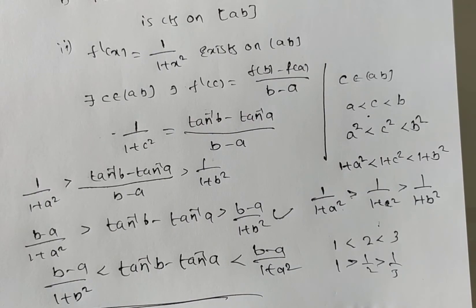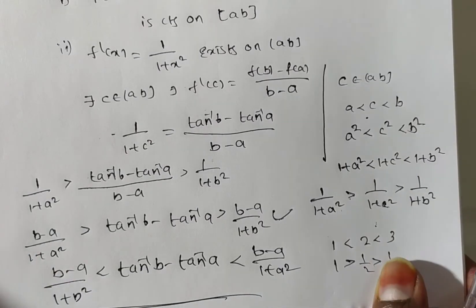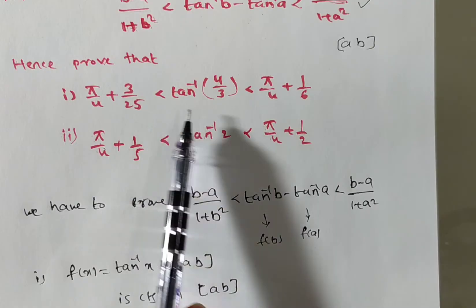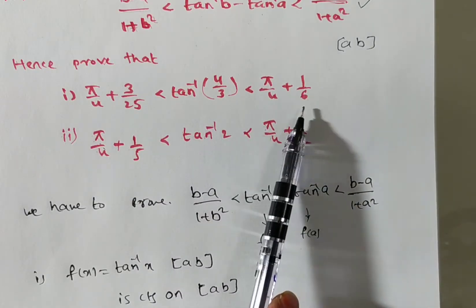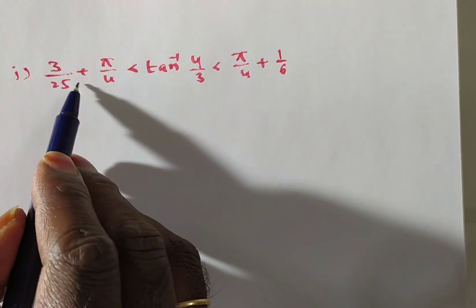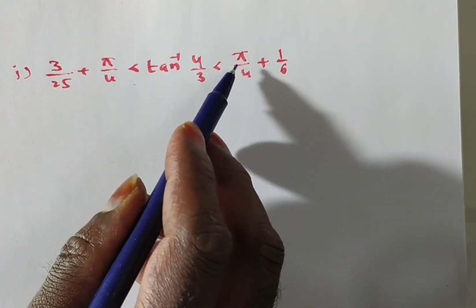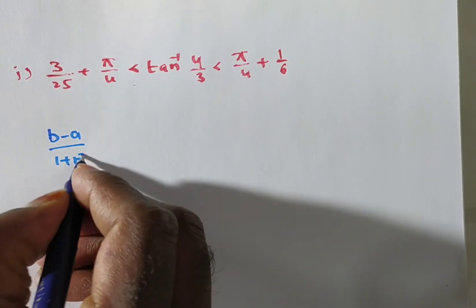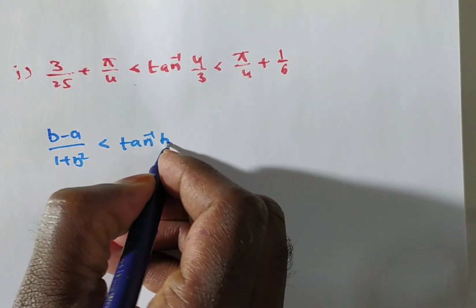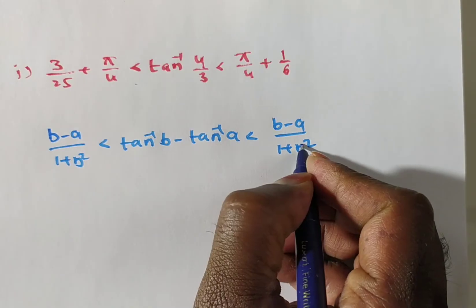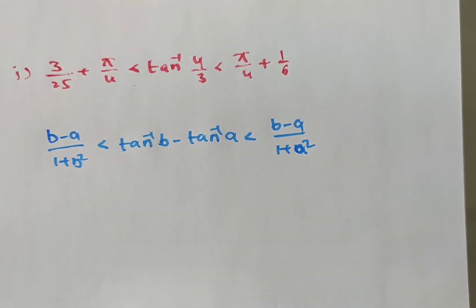Friends, are you understood how to prove the inequality? Now we have to deduce two inequalities. First inequality: pi by 4 plus 3 by 25 is less than tan inverse (4/3), which is less than pi by 4 plus 1 by 6. We compare with the proven inequality and replace the values of a and b.